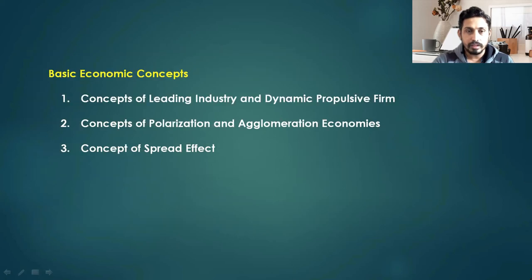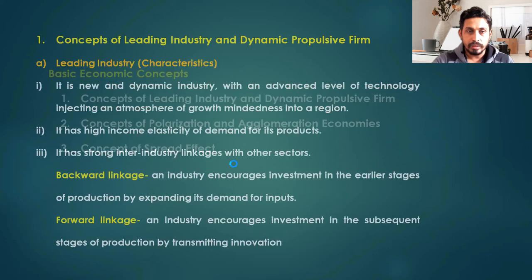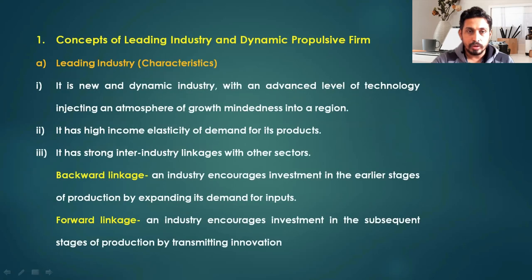The basic economic concepts discussed in Growth Pole theory are: first, the concept of the leading industry and dynamic propulsive firm, based on Schumpeter's theory; second, the concept of polarisation and agglomeration economies, and how industries benefit from those economies; and third, the concept of the spread effect, also called the trickle-down effect.